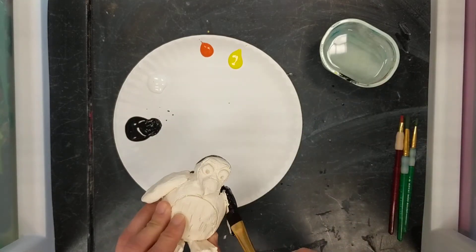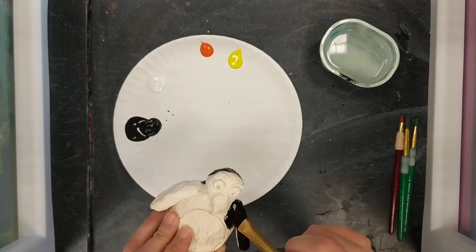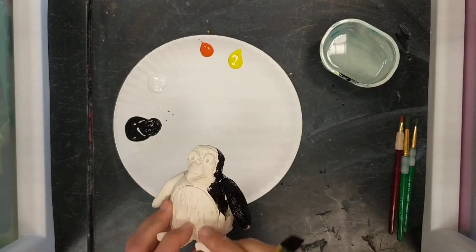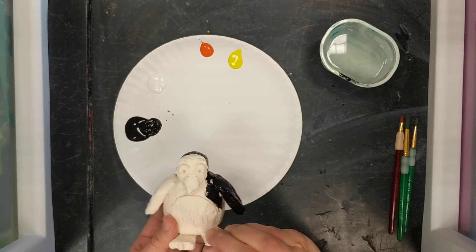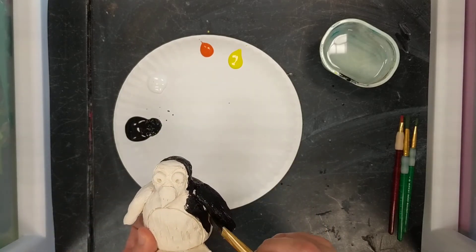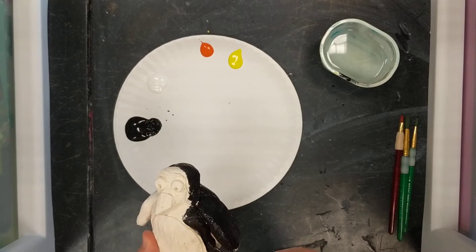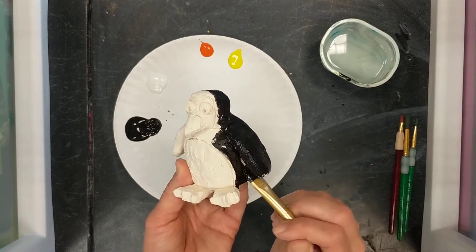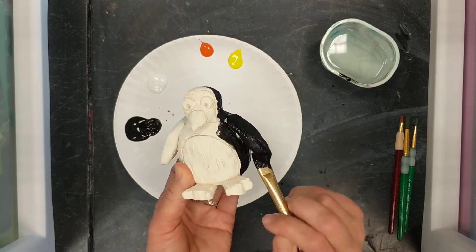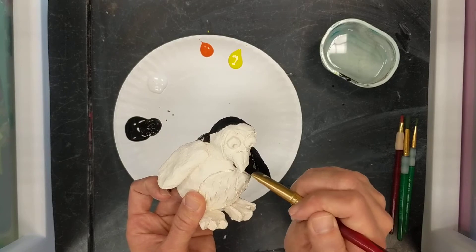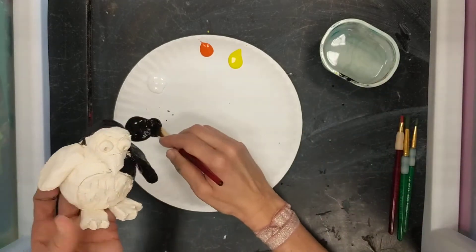So once I get most of this filled in, now I have to be a lot more careful when I'm getting closer to the edge here where this is going to be white. So I'm going to carefully hold my penguin here and take this brush and get close to the edge, but try not to get on my feet or where I want it to be white, because it's going to be hard if it gets black on there to then be white afterwards.